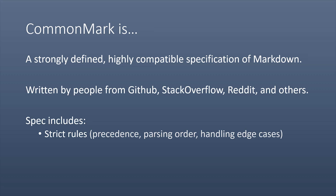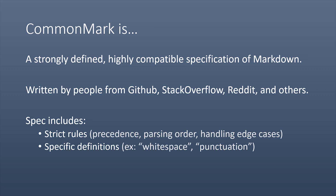The spec includes things like strict rules about precedence, parsing order, and handling edge cases. For each of these rules, there are very specific definitions — things like white space are defined in detail, punctuation is defined: not only what is punctuation, but what code points in Unicode are punctuation, and how punctuation affects the parsing of certain types of elements. The spec also contains 613 different examples of sample Markdown input and HTML output, allowing parsers to ensure compliance through functional tests.